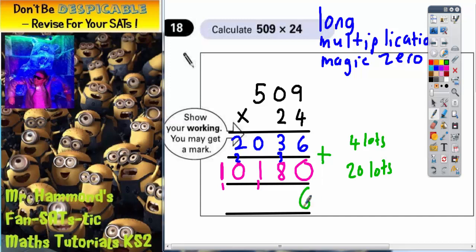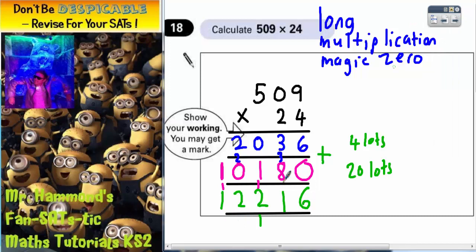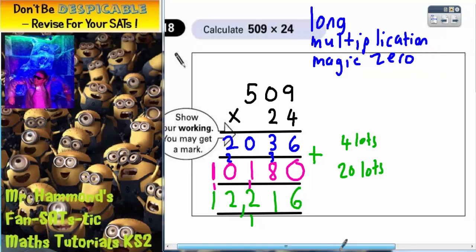So 6 plus 0 is 6. 3 plus 8 is 11. Put the 1 in, carry the 1. 0 plus 1, plus the 1 I carried, is 2. 2 plus 0 is 2. And then I've just got a 1 on the end here, so that's 1. So my final answer should be 12,216.